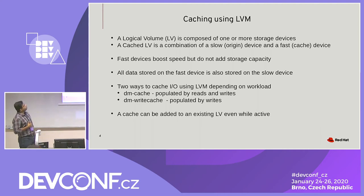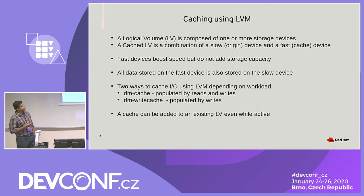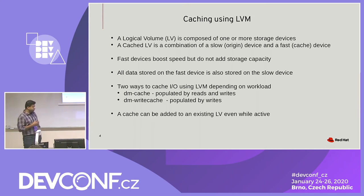In LVM, a logical volume is composed of one or more storage devices. A cache logical volume is a combination of a slow origin device and a fast cache device. LV create allows you to specify the actual device for the logical volume — typically you'd use the fast disk to create your cache logical volumes, while your slow disk is assumed to already exist with a file system on it and currently serving I/O. The fast device boosts speed but doesn't aggregate storage capacity, so total capacity is that of the slower disk. The cache stores frequently accessed blocks and services I/O requests from the fast device when those blocks are cached.